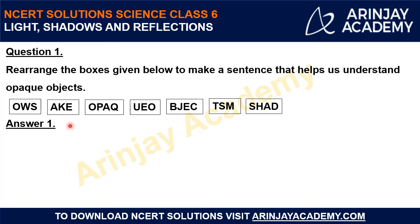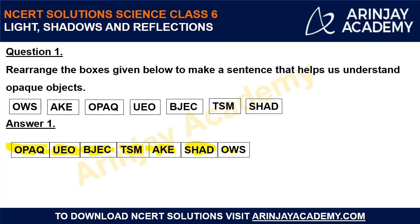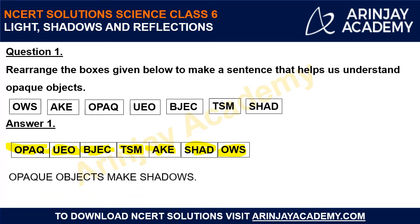Alright, so I believe you must have solved it. The boxes we see here are: the first box is OPAQ, the second contains UE O, the third contains BJEC, the fourth contains TSM, the fifth contains AKE, the sixth contains SHAD, and the seventh contains OWS. Can you observe the statement formed after this rearrangement? Yes — it is: 'Opaque objects make shadows.'